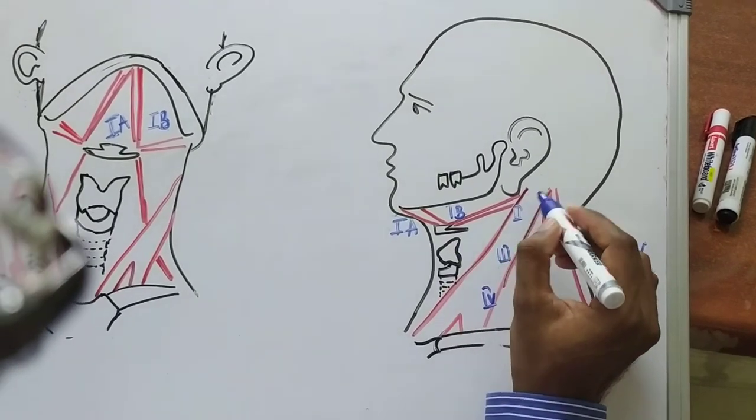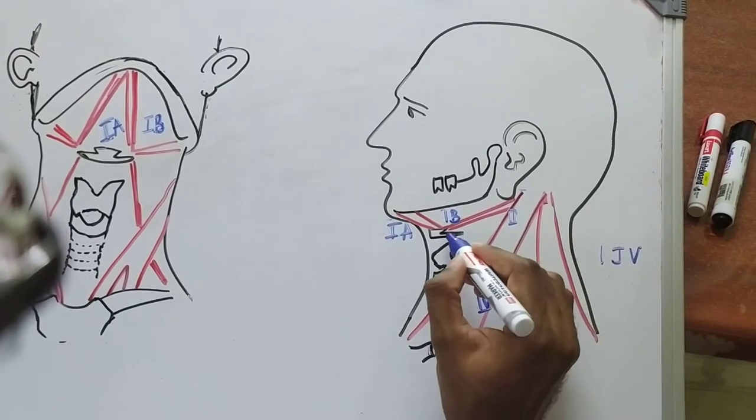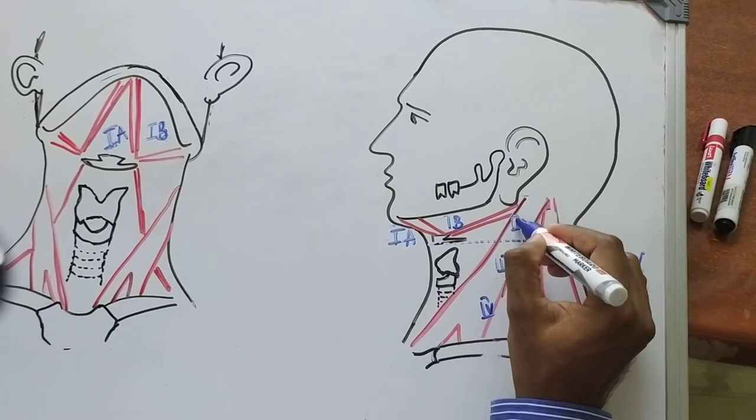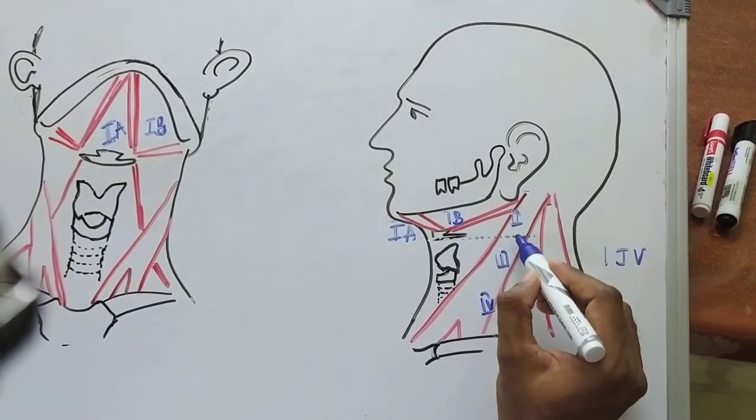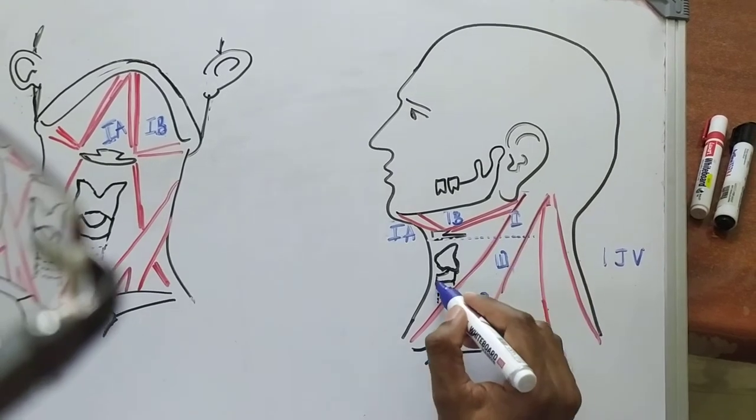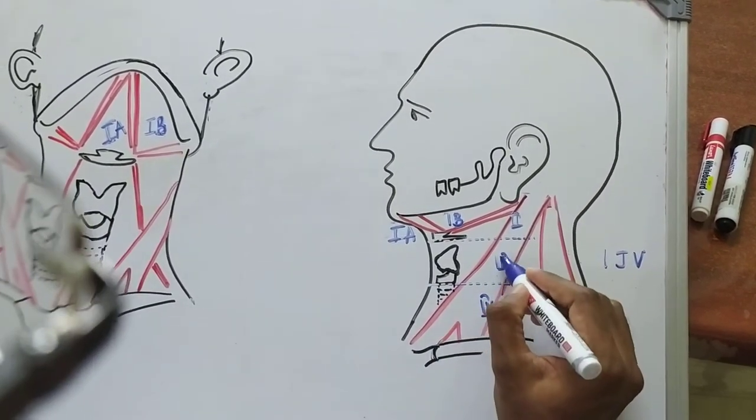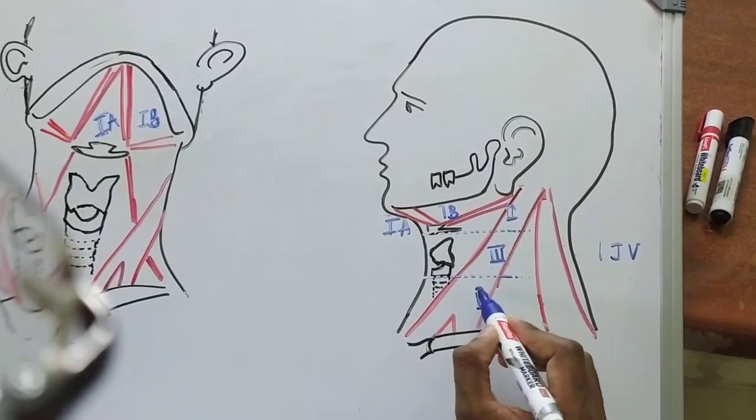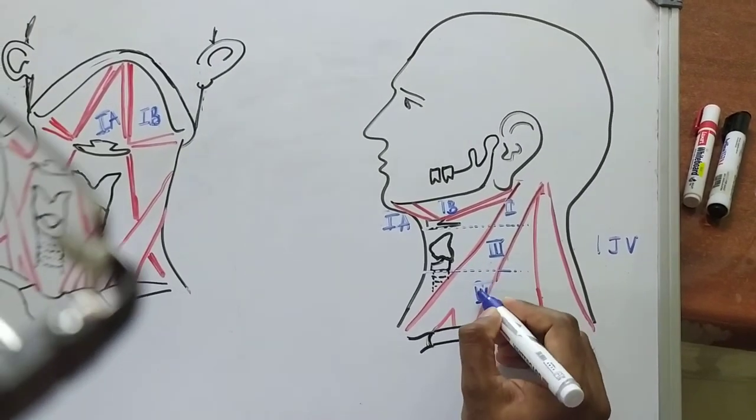The group of nodes extending all the way from the skull base up to the hyoid bone, up to this level, come in level 2. The level of nodes extending from the hyoid bone up to the lower border of the cricoid cartilage come in level 3. The group of nodes extending from the lower border of the cricoid cartilage up to the clavicle come in level 4.